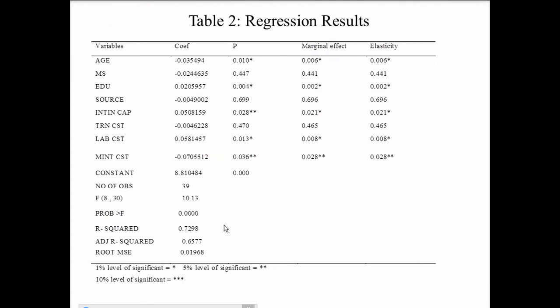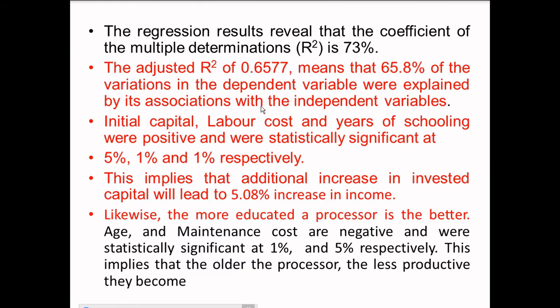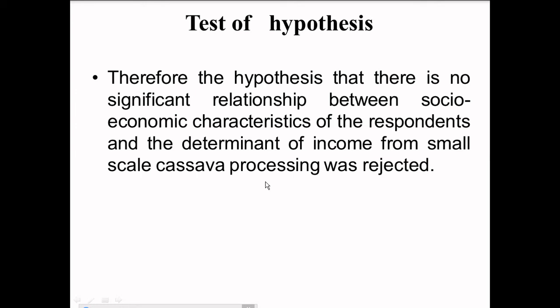Table 2 shows the regression results. The significant variables are age, education, initial capital, labor costs, and maintenance costs at 1% and 5% respectively. Initial capital, labor costs and years of schooling were positive and statistically significant at 5%, 1% and 1% respectively. This implies that an additional increase in invested capital will lead to a 5.08 increase in income. The more educated the processor is, the better. The null hypothesis was thereby rejected because there were significant levels of relationship between the socio-economic characteristics and the incomes of the processors.